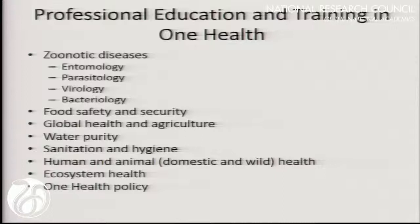Professional education and training in One Health — what would that look like? There would be a greater emphasis on zoonotic diseases, including entomology and parasitology. There is some coursework taught on that, but not enough. More emphasis on virology and bacteriology. Schools of public health should teach more on food safety and security, global health and agriculture — there is a direct tie between the two. Water purity, sanitation, hygiene, both human and animal, domestic and wild health.